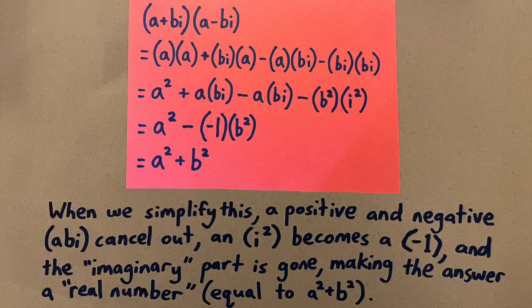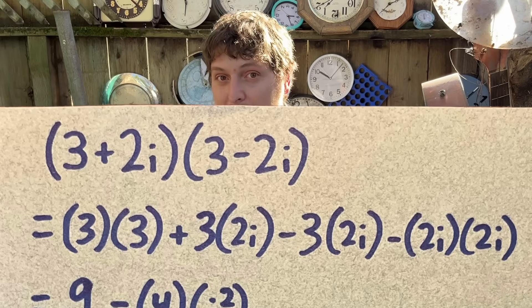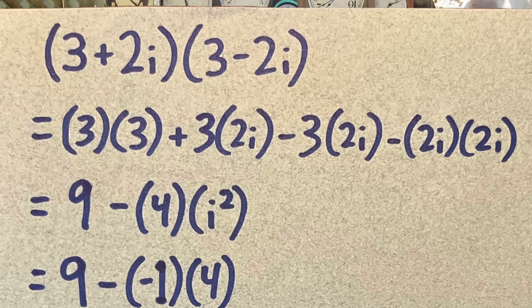In fact, it's a real number that's exactly equal to a squared plus b squared. Let's look at an example. If I multiply 3 plus 2i and 3 minus 2i,